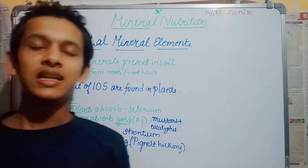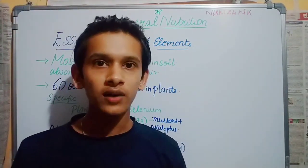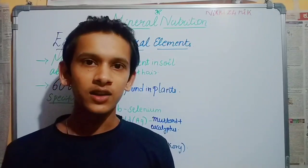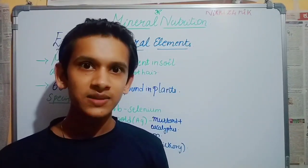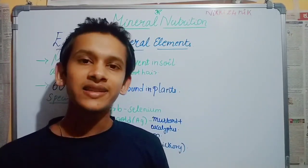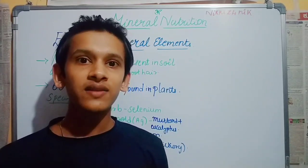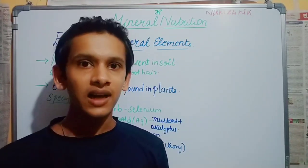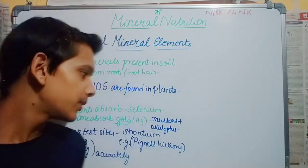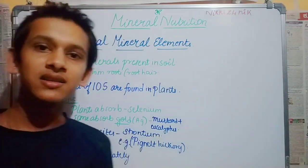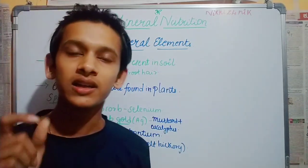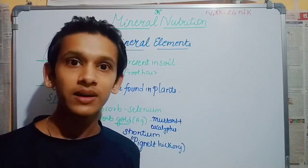Next is nuclear test sites. In countries that have nuclear weapons, nuclear waste must be released at particular secure sites. If you look at plants growing at those sites, radioactive elements are absorbed. We can identify radioactive elements this way. To find those areas, we can determine plants such as pigweed and hickory — strontium, a radioactive element, is present.